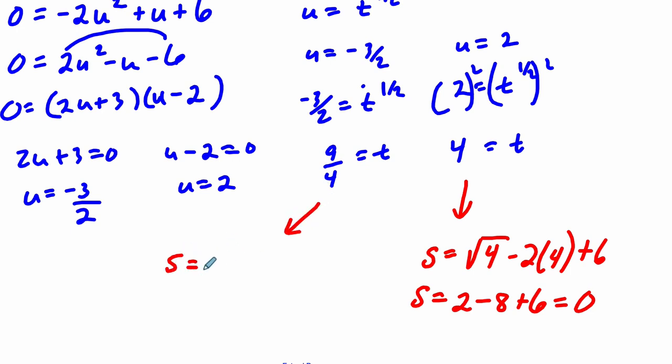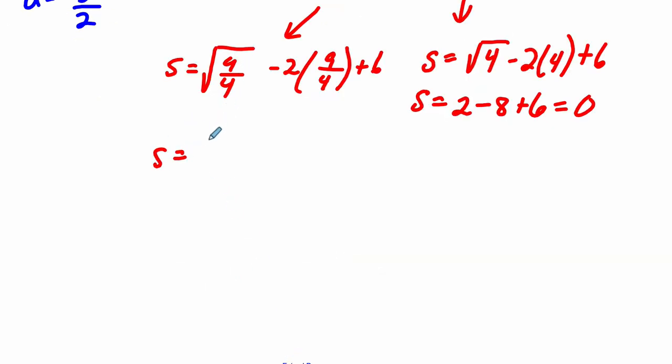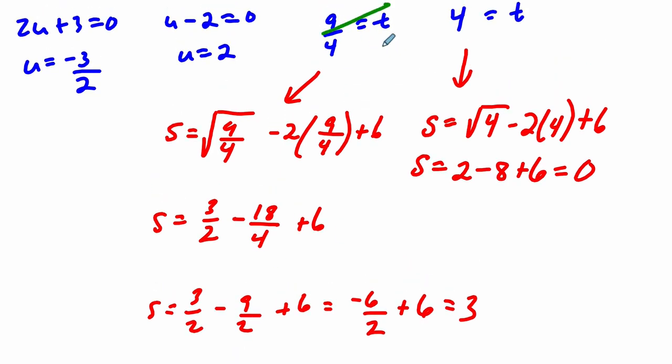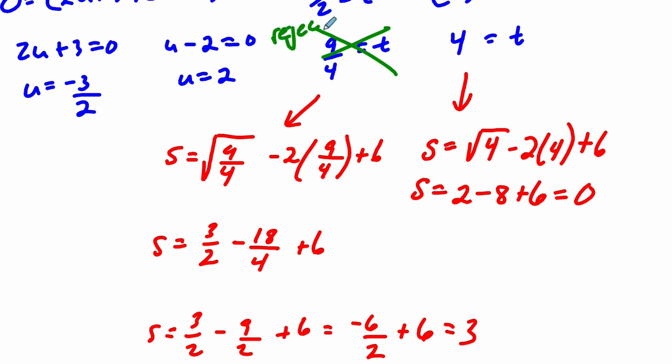But in this case, when I plug in 9 fourths, I get S equals the square root of 9 fourths minus 2 times 9 fourths plus 6. The square root of a fraction is just 3 over 2, square root of top, square root of bottom. Minus 18 over 4 plus 6, that's just 3 halves minus 9 halves plus 6. And that does not equal 0. What does that equal? 3 minus 9 is negative 6 halves, which is negative 3, plus 6 is 3. Not what we need. That equals 3. So that's an extraneous solution, so we can reject that. And you should write the word reject, so they know what you are talking about.